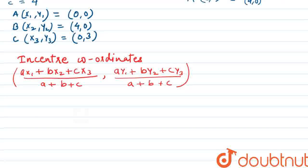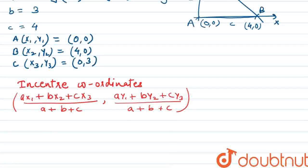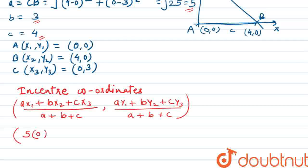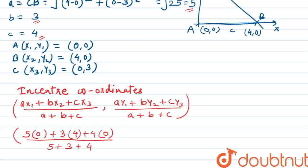So now we put in the values. The value of a is 5, b is 3, and c is 4. For the x-coordinate: (5 × 0) + (3 × 4) + (4 × 0) all divided by (5 + 3 + 4), which gives 12 upon 12.